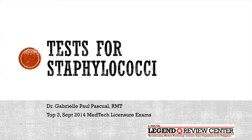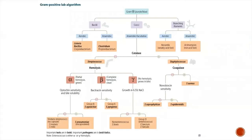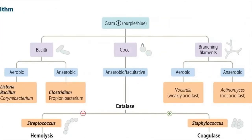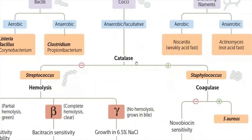Let's begin with tests for staphylococci. This is an algorithm to guide us in identifying our organisms. We always begin with the gram stain, and based on the gram stain we will select what biochemical tests we will do. If you have gram-positive cocci, we start with the catalase test.